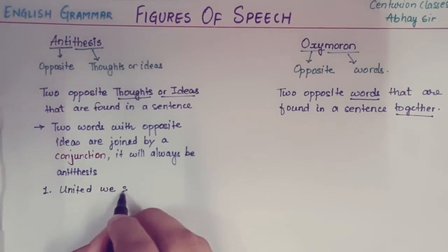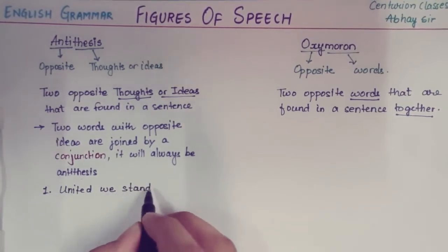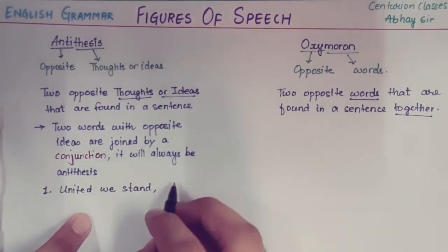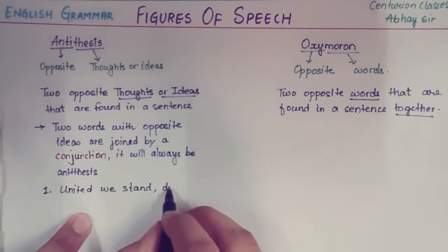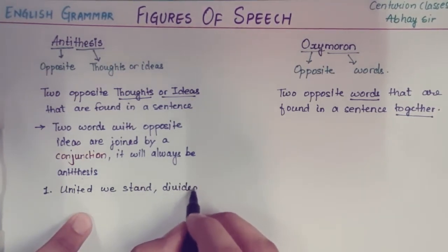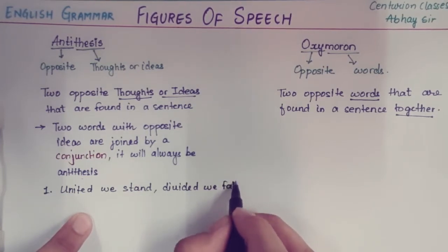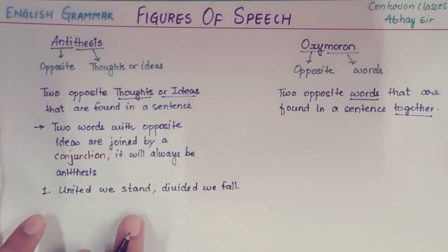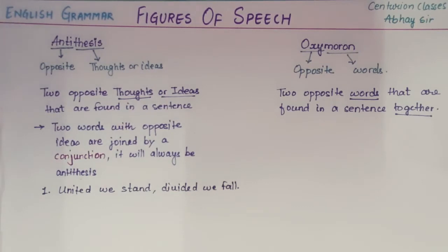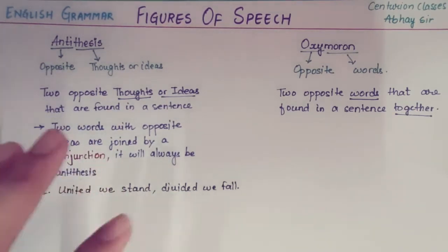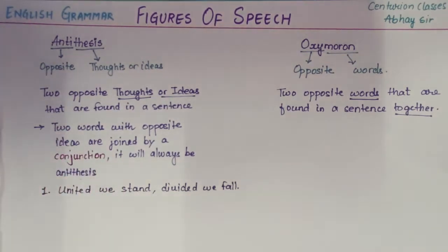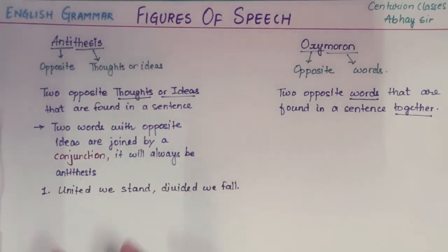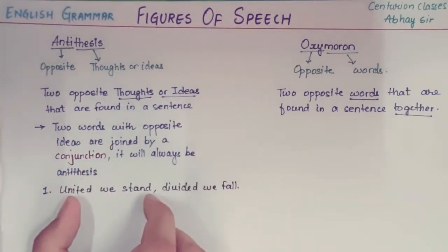The first example of antithesis is: 'United we stand, divided we fall.' As you can see, there are two opposite thoughts. They are not necessarily always joined with a conjunction, but majority of the times you will find a conjunction. It can be a subordinating or coordinating conjunction. This example makes a complete sense — it is a complete idea.